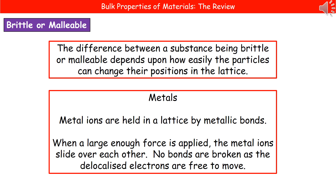If we consider what happens in metals, those metal ions are being held in their lattice by metallic bonds, which is that attraction between the delocalized electrons and the positive metal ions. If we apply a large enough force to our metal, the metal ions are going to slide over each other. Because those delocalized electrons are free to move, no bonds are actually being broken. So metals are malleable.